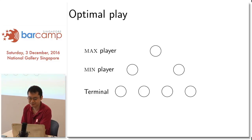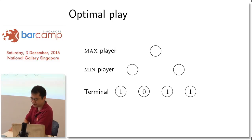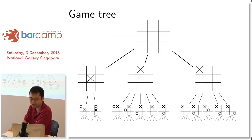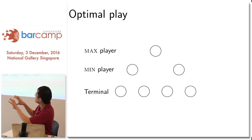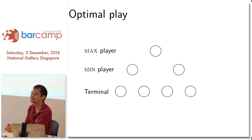If you imagine we expand this tree all the way to when the game is over — we go a few more turns, like three or four — and the game is over, we call this last row of games the terminal, because it means finished already.